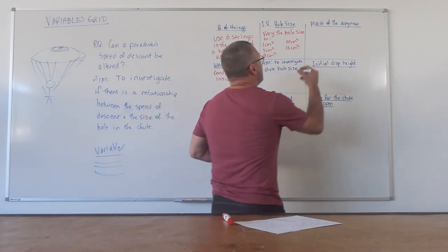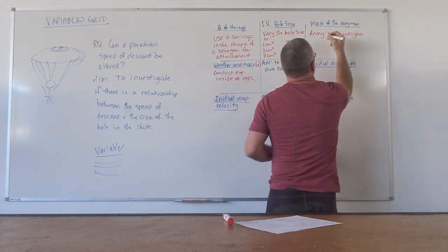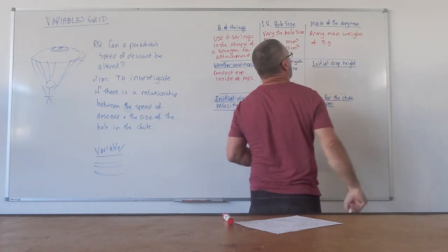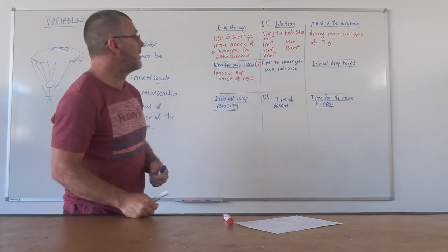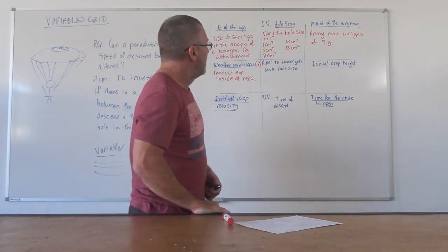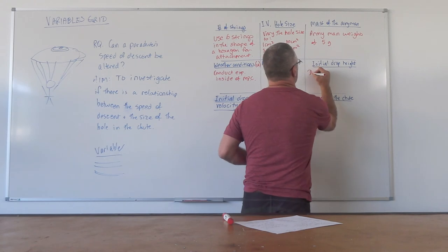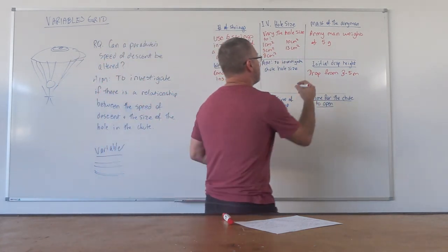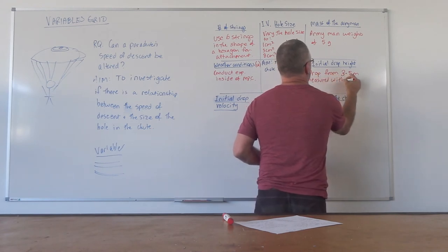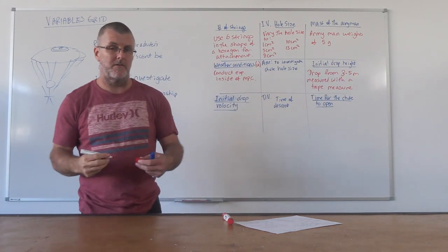Let's look at the mass of the army man. So we're going to use army man with a mass of, I'm just guessing, I don't know what they weigh, but let's say five grams, whatever it is. You could certainly measure it. And then you put that into your variables grid and say, that's exactly the mass that we're going to use, would be 3.9 grams. And that way that experiment can be replicated exactly. The initial drop height, drop from 3.5 meters. We're going to drop it from 3.5 meters measured with a tape measure, just for accuracy.